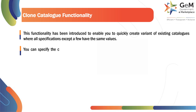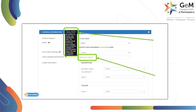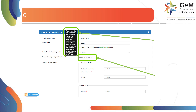You can specify the catalog of which you need to make a variant, make changes in the required specifications, and publish. To start with the creation of a new catalog, the seller needs to furnish all the details pertaining to the catalog which he wants to create in the marketplace, as shown.